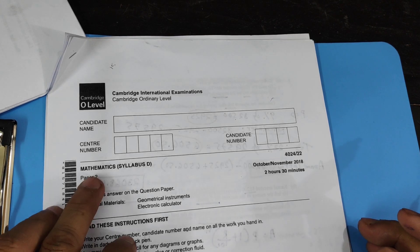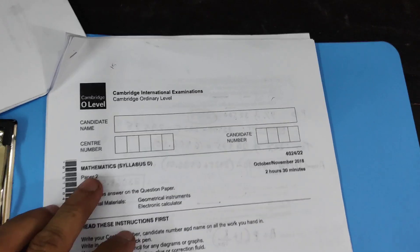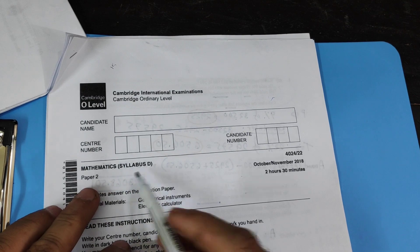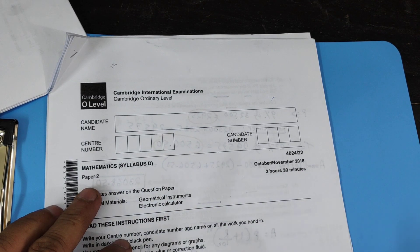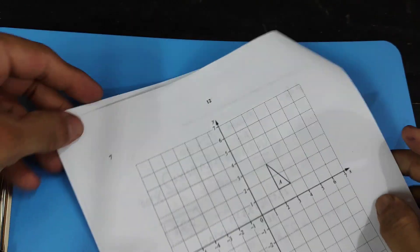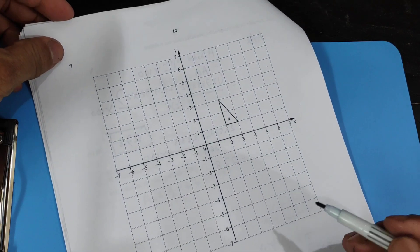Good morning, students. Welcome to my video to solve the mathematics syllabus D paper 2, 4024 variation 22, October November 2018. In my last video I have solved up to question number six. Today I'm gonna do question number seven onwards.